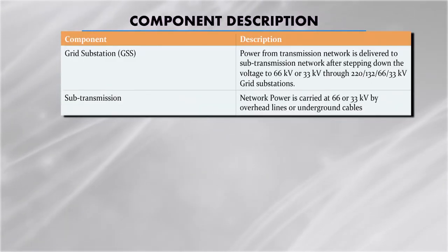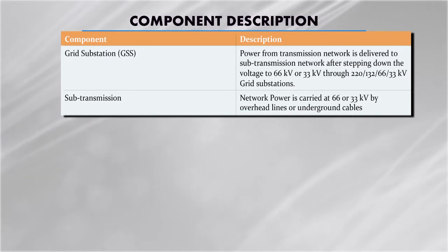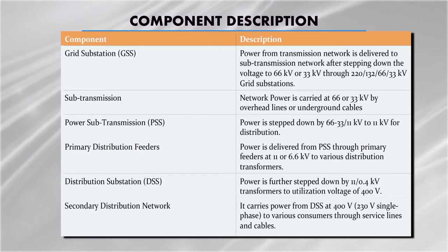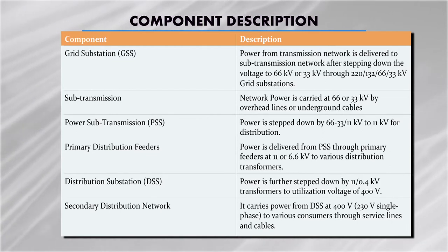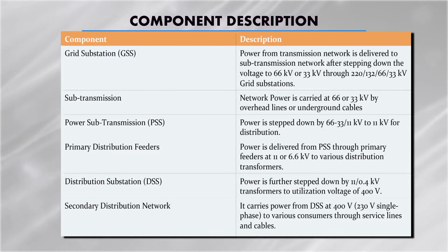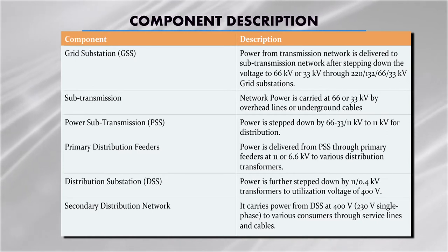In the sub-transmission system, network power is carried at 66 to 33 kV by overhead lines and underground cables. At the distribution substation, power is further stepped down by 11 kV / 0.4 kV transformers. A transformer is used either as a step-up or step-down transformer — the voltage can be stepped up or stepped down from one level to another for utilization purposes. The transformer is a very essential piece of equipment for the power transmission and distribution system.